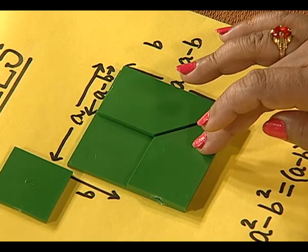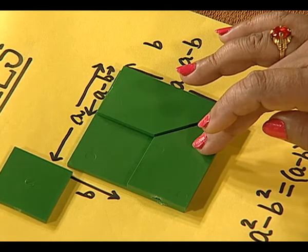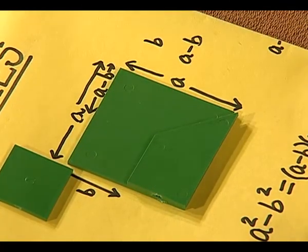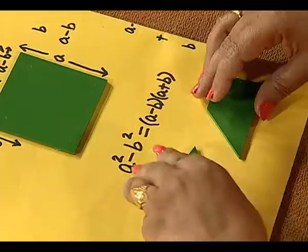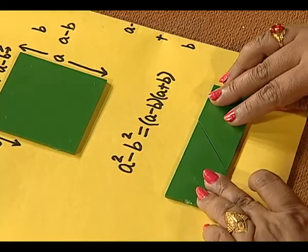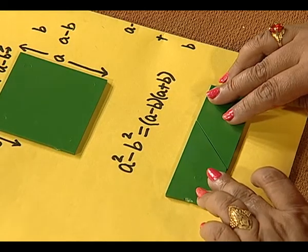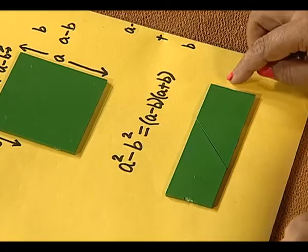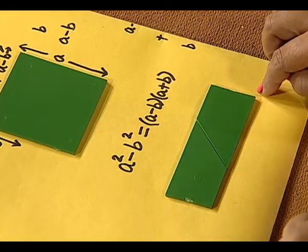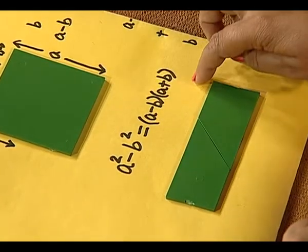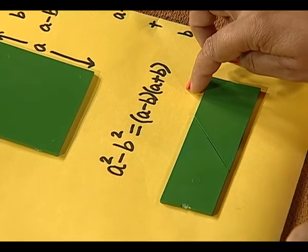For that, let us arrange these 2 cutouts in such a manner that we are able to calculate its area. How will we do that? Let us pick up these cutouts and arrange them in such a manner that we get a rectangle. What is the area of a rectangle? It is length into breadth. Now we had this length to be a minus b and the length of this is a plus b.